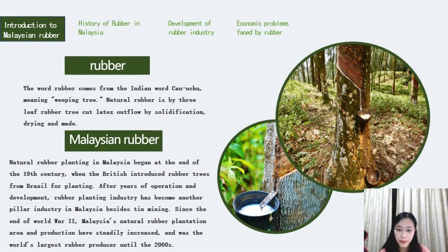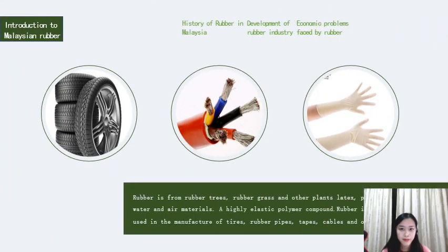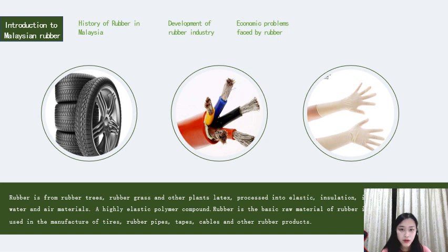Natural rubber planting in Malaysia began at the end of the 19th century when the British introduced rubber trees from Brazil for planting. Since the end of the Second World War, Malaysia's natural rubber planting area and production have steadily increased and it was the world's largest rubber producer until the 2000s. Rubber is derived from rubber trees, rubber grass, and other plants' latex,